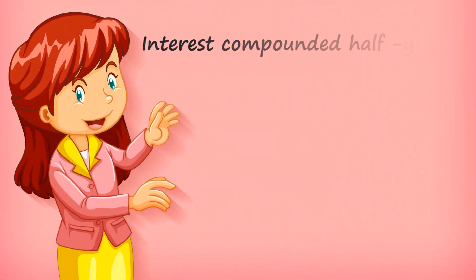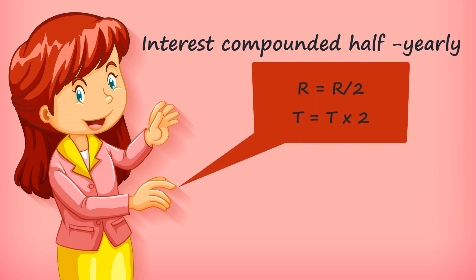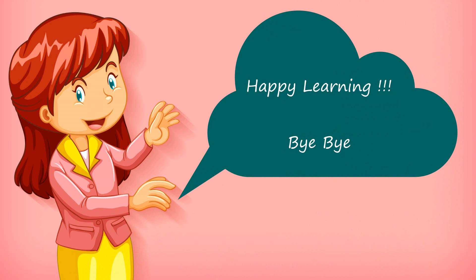When interest is compounded half yearly, always remember: divide the rate by 2 and multiply the time period by 2. I hope the sum is clear. Let's meet up with another interesting video. Till then, happy learning, stay safe, take care, and bye bye.